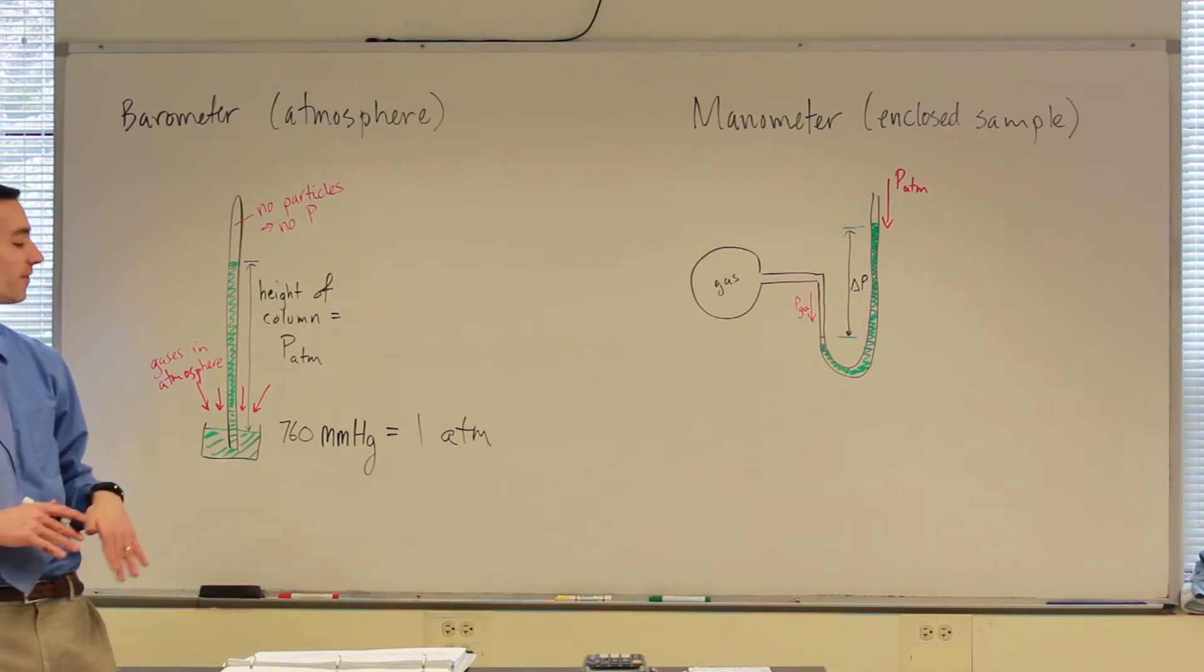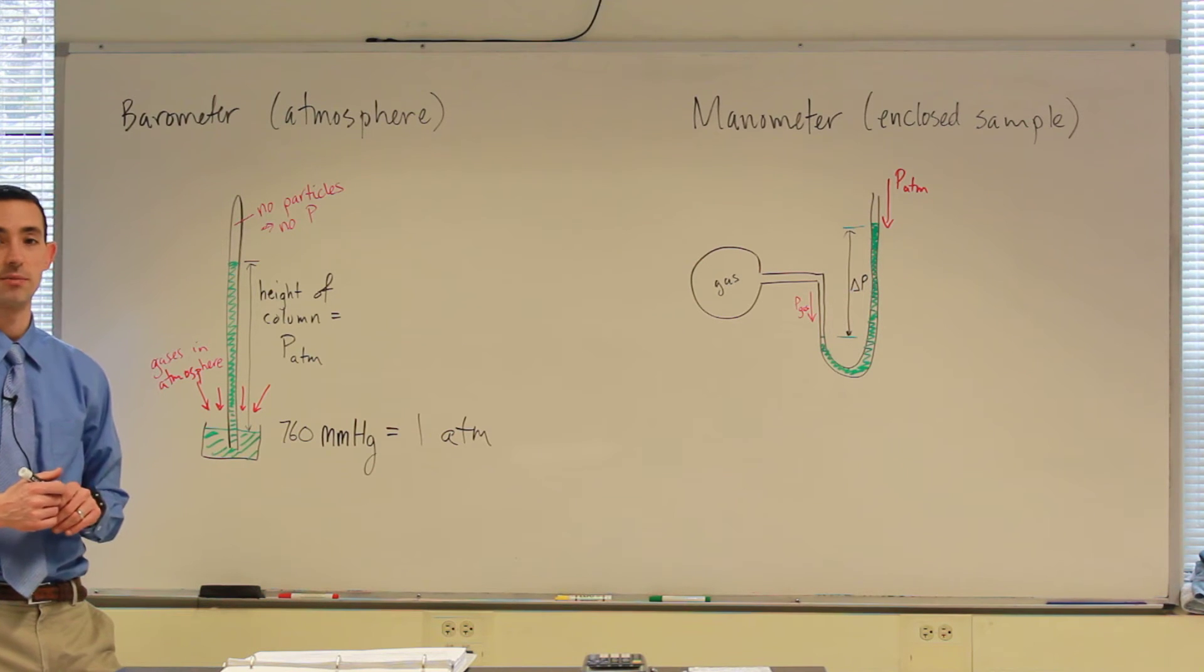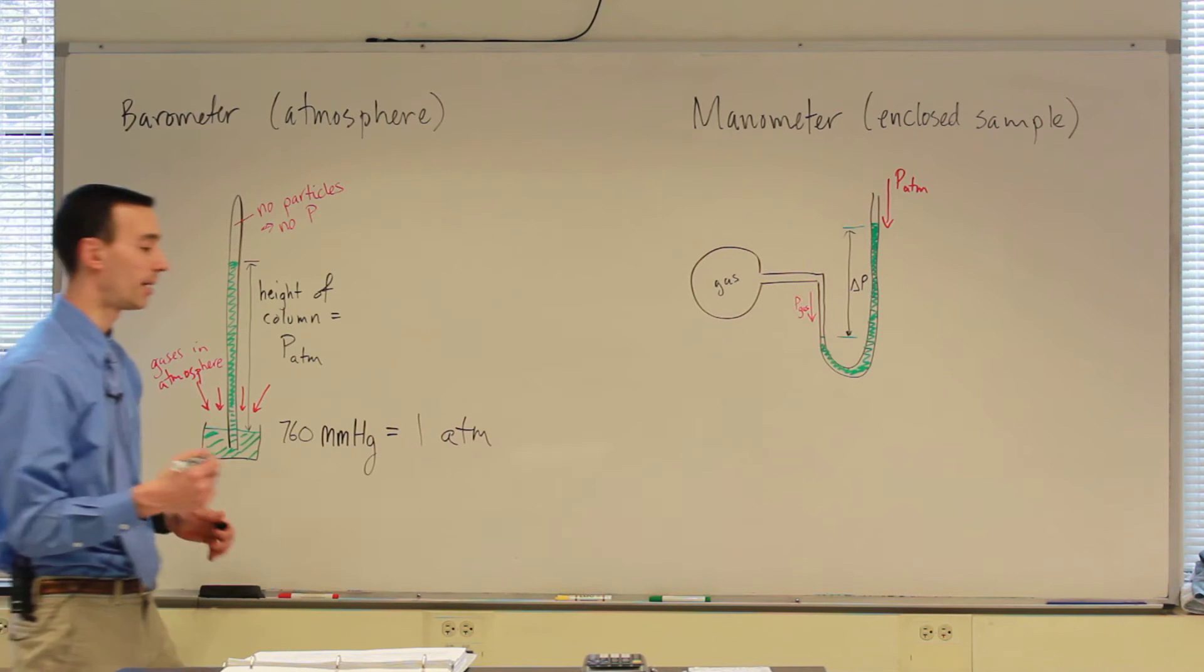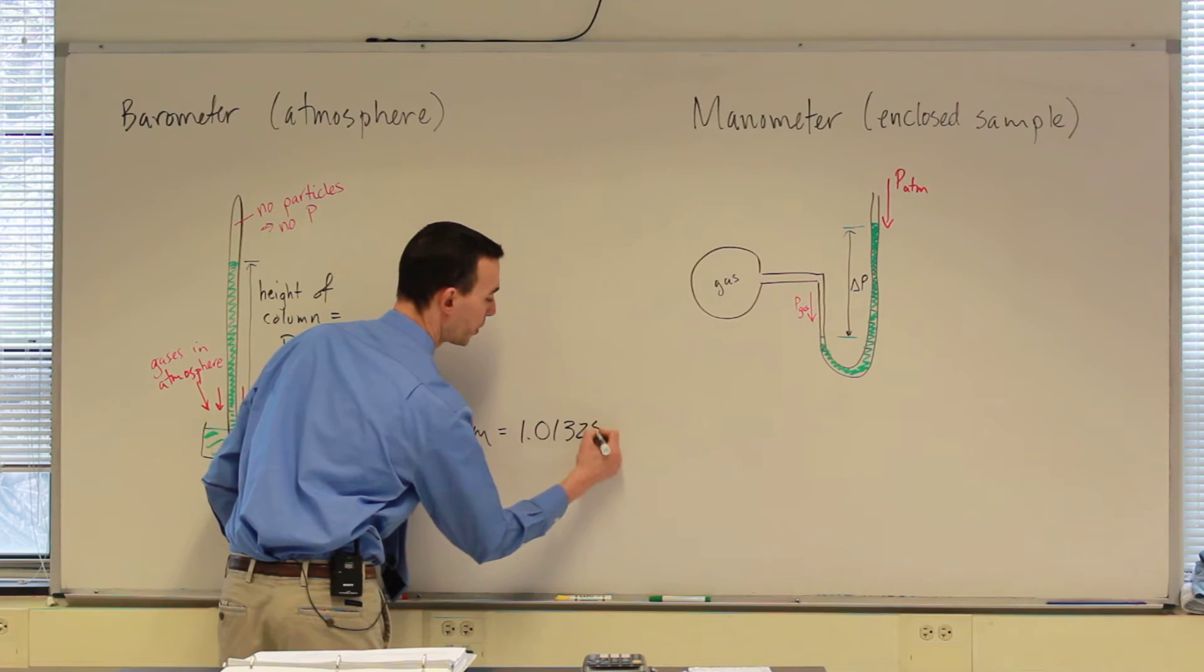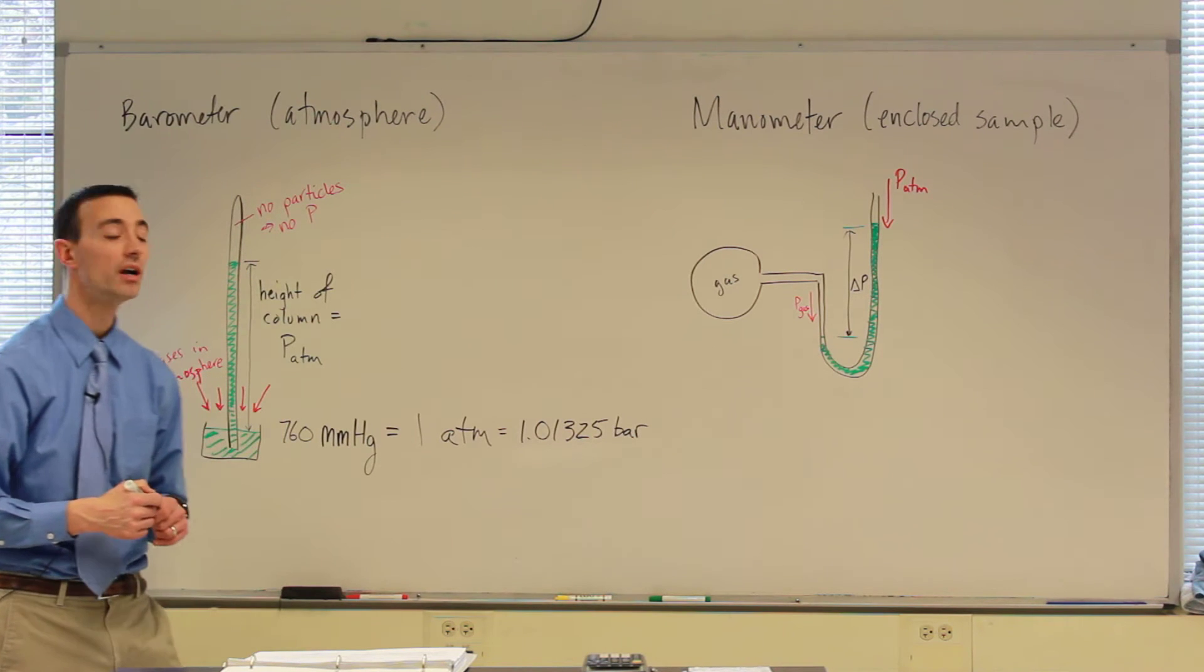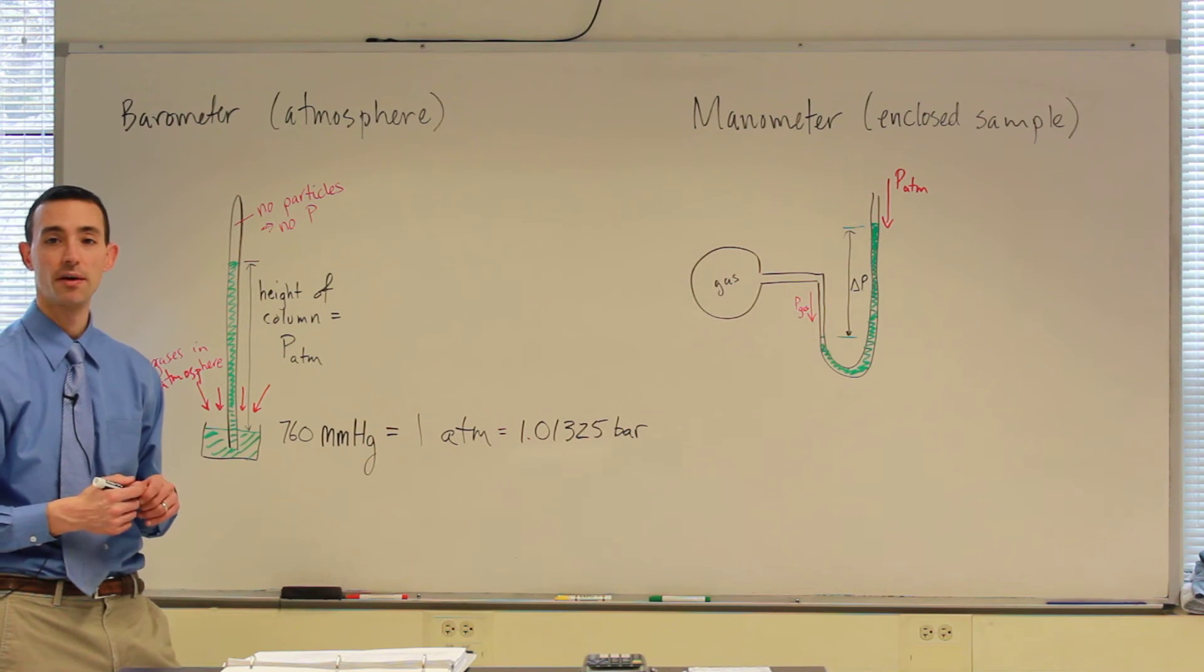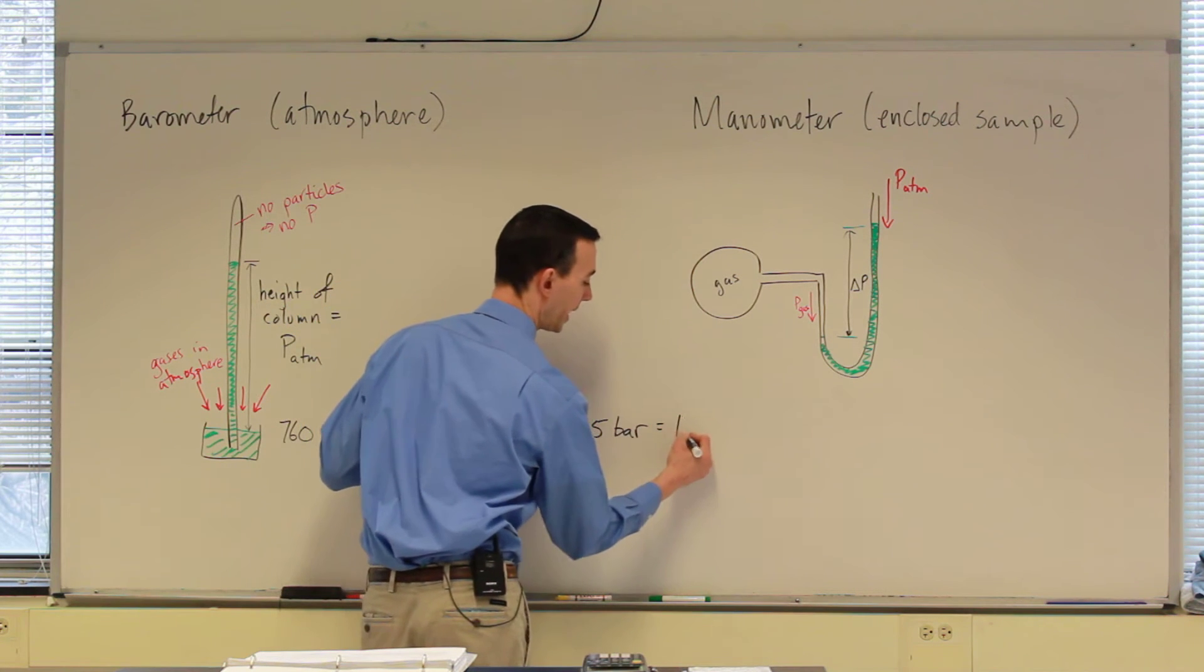But around sea level, the pressure is usually around one atmosphere or 760 millimeters of mercury. Other units of pressure, though, have become pretty prominent. One is now called the bar. And the bar and the atmosphere are pretty close to each other. 1.01325 bar, meaning barometric pressure, are equal to one atmosphere.